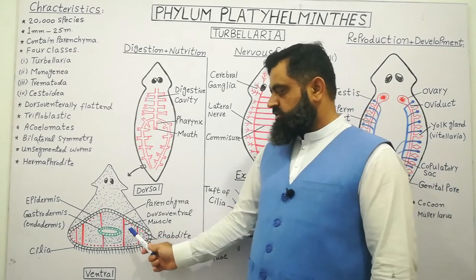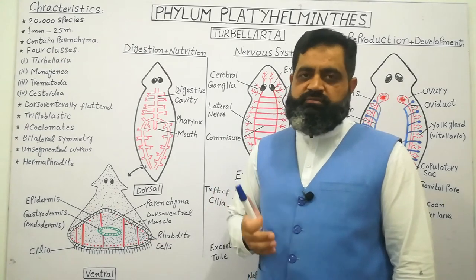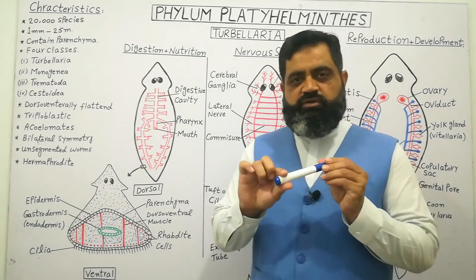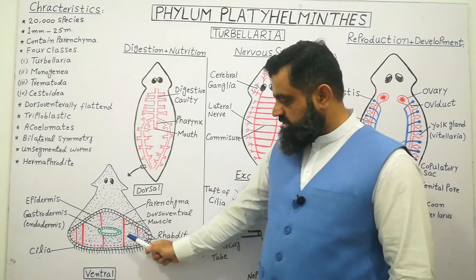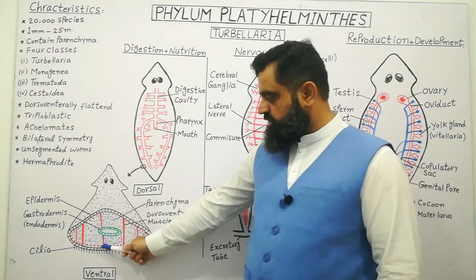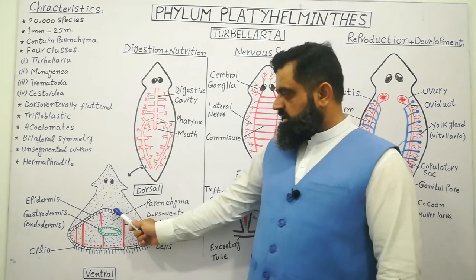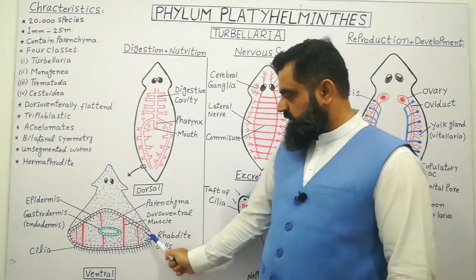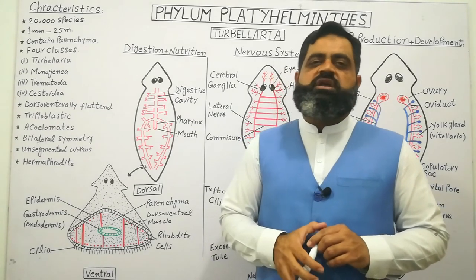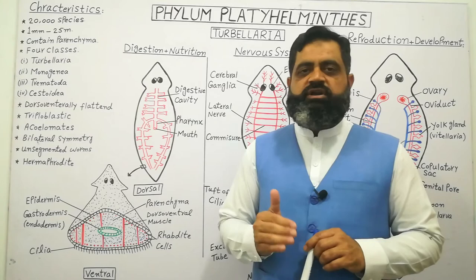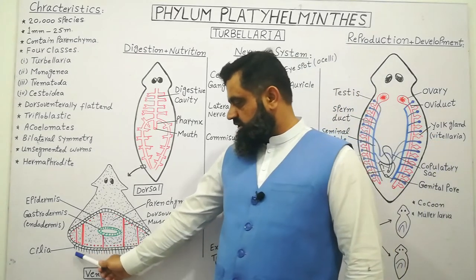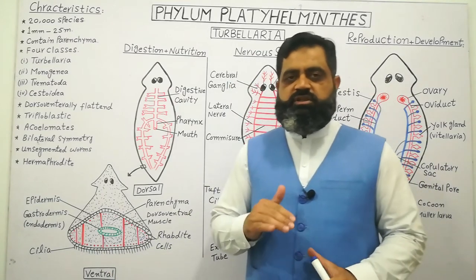These animals contain circular muscles, longitudinal muscles, and dorsoventral muscles. Circular muscles are arranged in the circumference of the body and longitudinal muscles are arranged along the length of the body. The dorsoventral muscles, shown in the red section of the diagram, are connected from the dorsal side to the ventral side. Inside the epidermis or ectoderm there are cells known as rhabdite cells, which produce mucous secretions that help to attach or detach the animal from surfaces. On the ventral side, many cilia are present which help in locomotion.